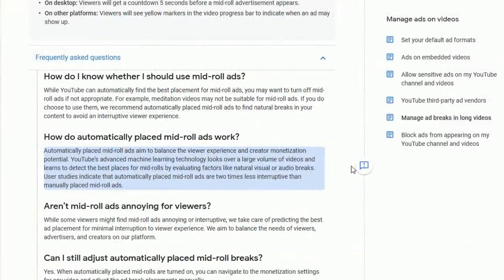And it says in the FAQs, How do automatically placed mid-roll ads work? YouTube's advanced machine learning technology looks over a large volume of videos and learns to detect the best places for your mid-rolls by evaluating factors like natural visual or audio breaks. User studies indicate that automatically placed mid-roll ads are two times less interruptive than manually placed mid-roll ads. So they're telling you that their Googlebot is better at editing than the human being.